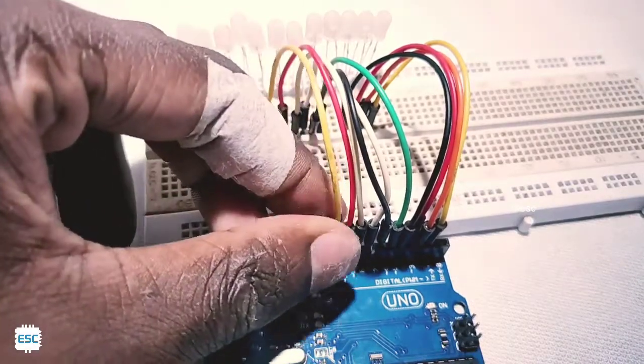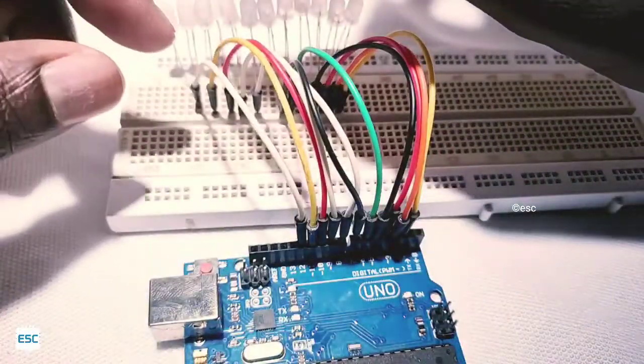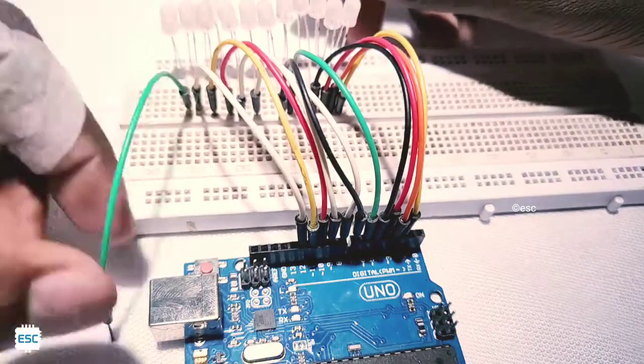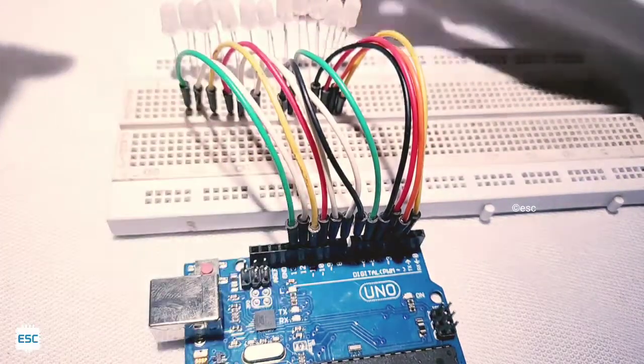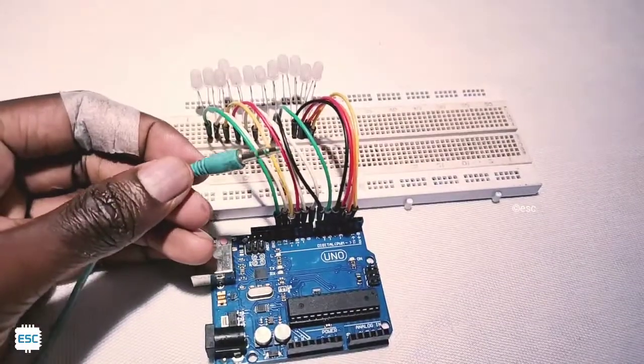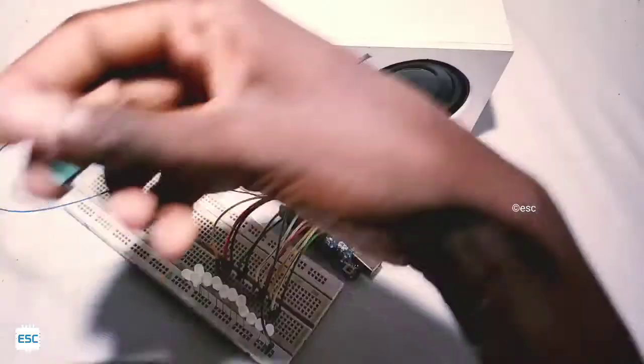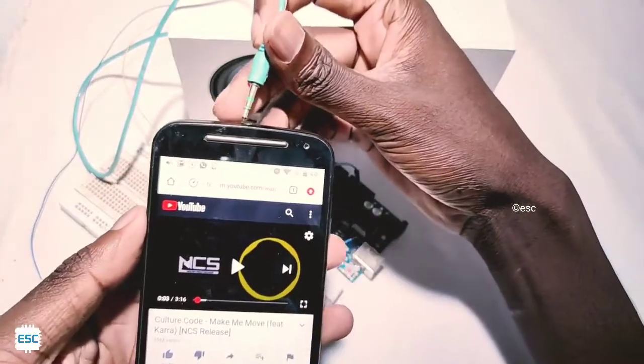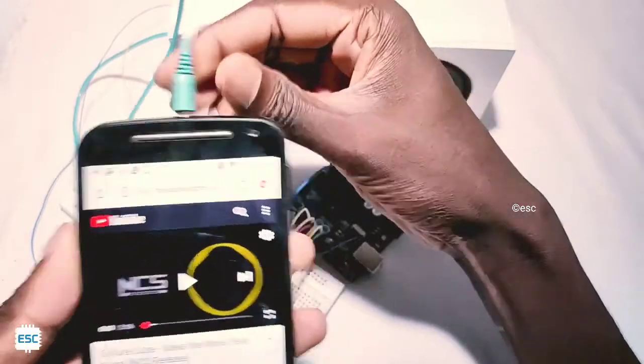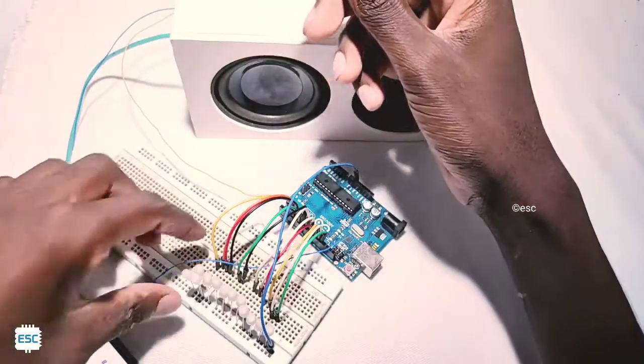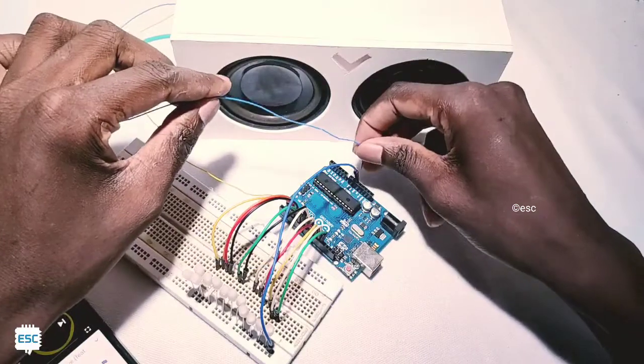After connecting all LEDs we need to connect an aux cable to Arduino. Connect the aux cable's other end to ground and the A0 pin, and also connect the aux cable to your speaker.